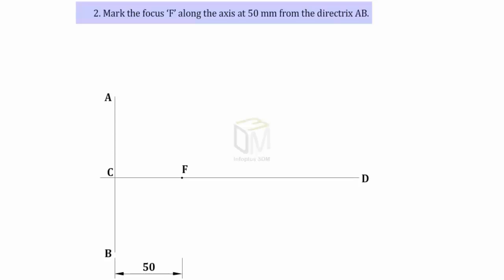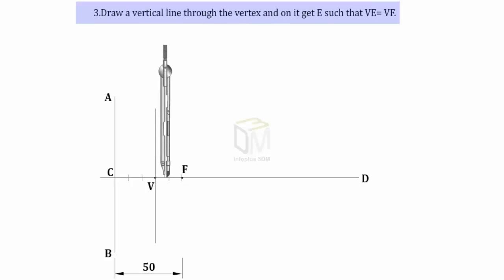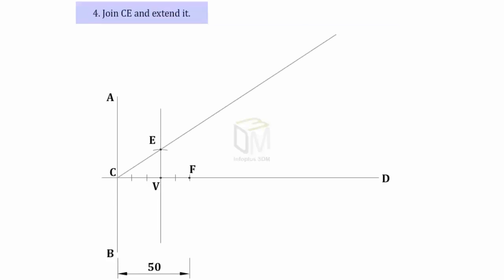Divide CF into 5 equal parts and mark the third division from the directrix as vertex V. Draw a vertical line through the vertex and on it get E such that VE is equal to VF. Join CE and extend it.